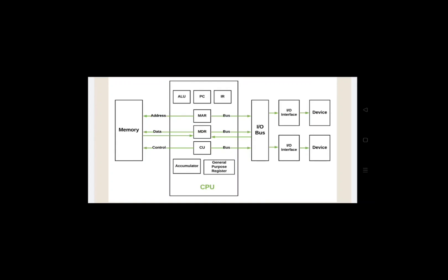The Instruction Register (IR) contains the 8-bit opcode of the instruction to be executed. The Memory Address Register (MAR) specifies the address of memory for a particular word. The Memory Data Register (MDR) stores the data to be transferred.